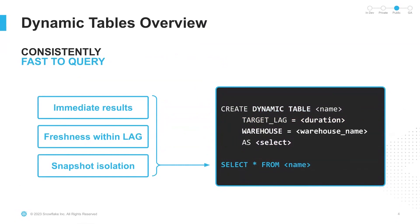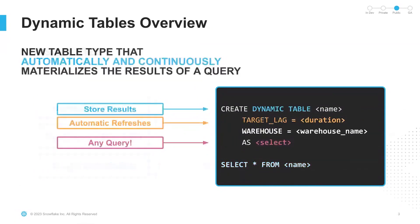I will call out that in the select statement, dynamic tables can read from tables, from views, and from other dynamic tables. So you can create a complex pipeline that looks like a DAG built off of various objects as well as dynamic tables themselves. Just in a few lines of SQL, you can build your continuous pipelines this way.